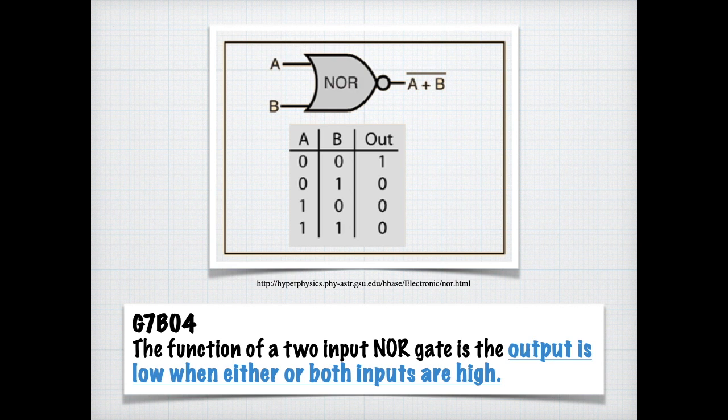Another common logic gate is a NOR gate, and if you'll notice by the truth table, the output is true when A and B is zero. So neither A nor B is true as output is true. And you can see the bar over the A plus B, that means NOT or inversion. So for the exam, you need to know that the function of a two input NOR gate is the output is low when either or both inputs are high.